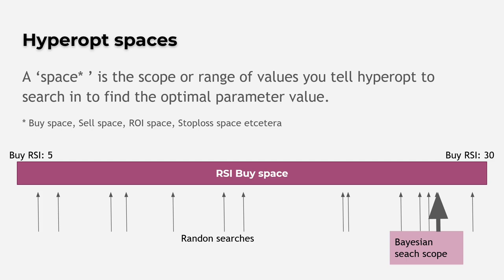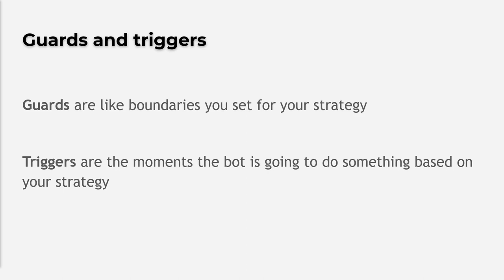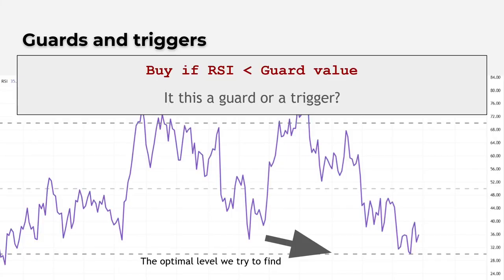The next concepts we have to know are guards and triggers. A guard is like a boundary for your strategy — across this boundary the bot is not allowed to do something. A trigger is the moment where the bot is actually acting on a signal. In this case, the guard for buying is the value after the lesser-than symbol. When RSI is above this guard value there is no buying allowed, but when RSI crosses down this value, that event is a trigger for the bot to buy the asset. As long as the RSI is above the guard there is no trigger, but the event of RSI crossing below the guard is the trigger to actually buy.